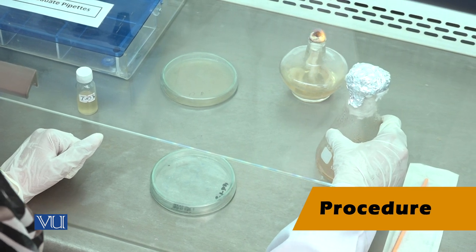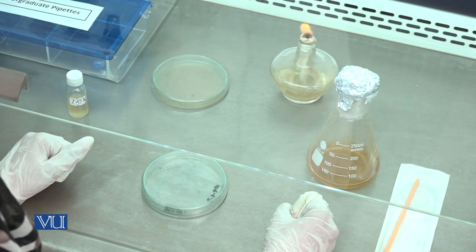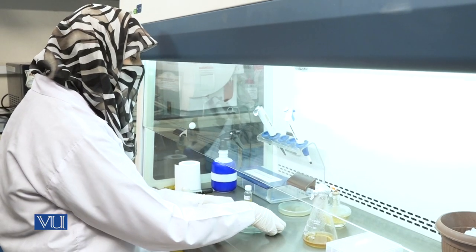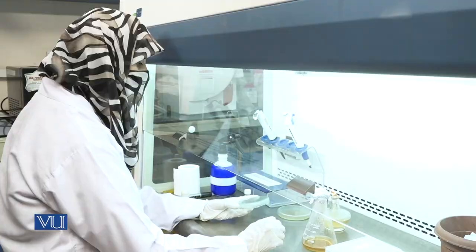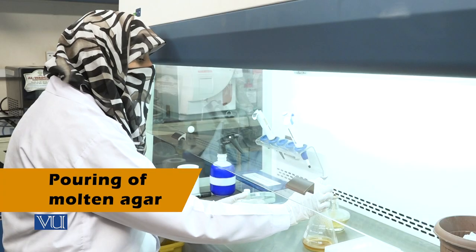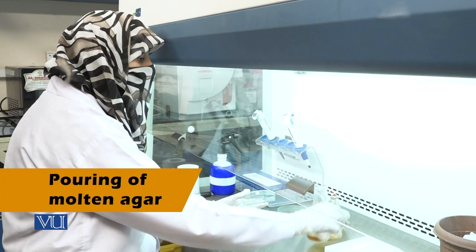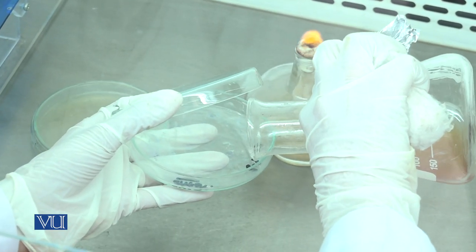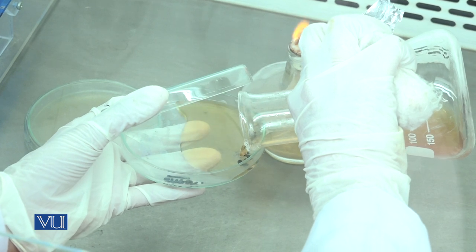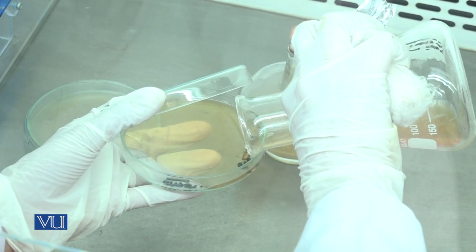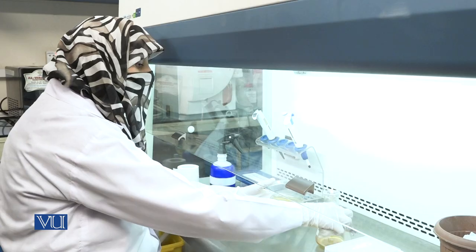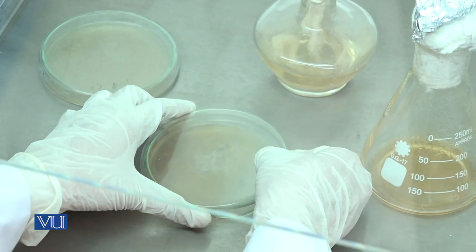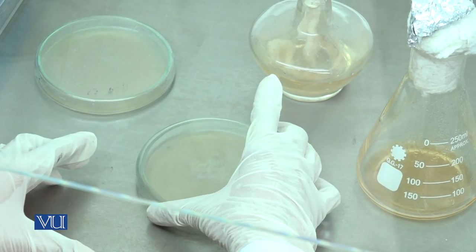Melt the agar and allow it to cool to less than 50 degrees centigrade. Now, take sterile petri plate and pour melted agar on plate. After pouring, place the plate for some time to dry.